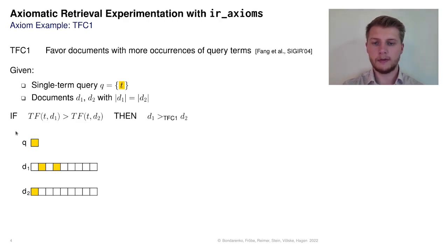At the example documents shown on the lower half of the slide, we can see that the query term highlighted in yellow occurs two times in document 1 but only one time in document 2. Thus, the TFC1 axiom would yield a preference towards document 1. Simple, isn't it?